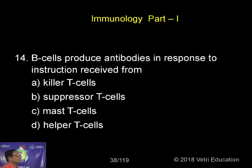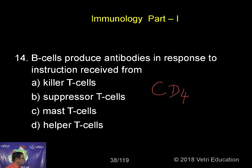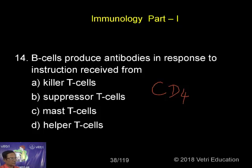That is why we normally refer to the helper T cells. One type of helper T cell is what is called CD4 helper T cells. There are two types of helper T cells: CD4 and CD8. This is what is called cluster differentiation molecules present on the surface of the cell, and accordingly we have CD4 and CD8.